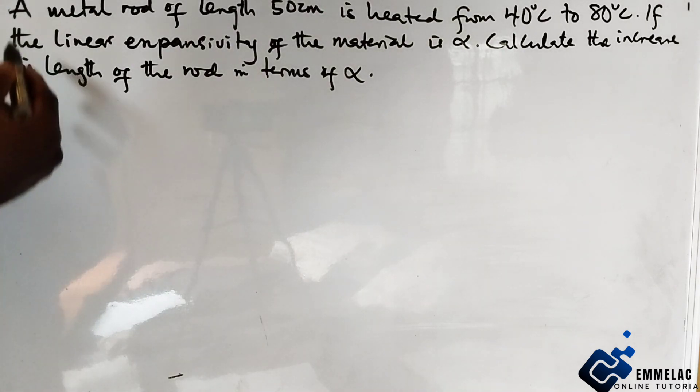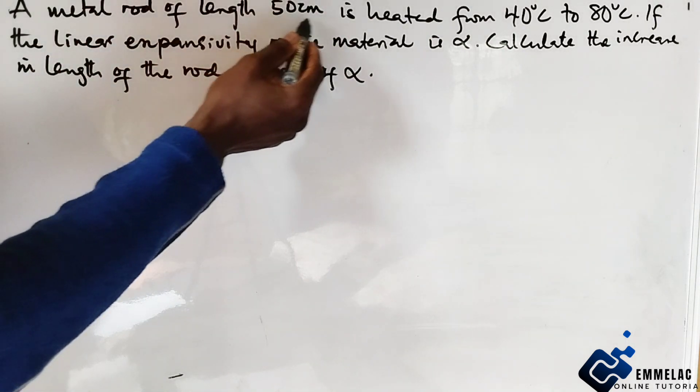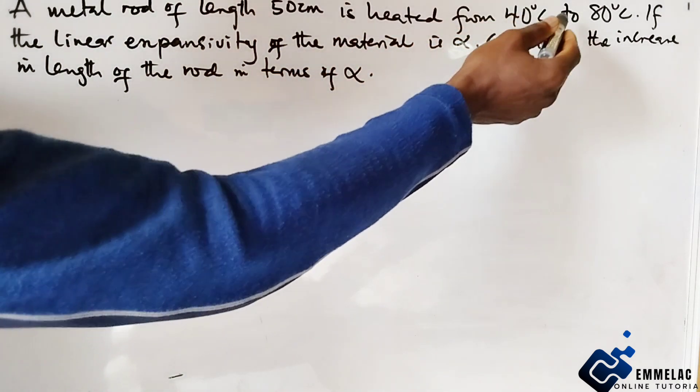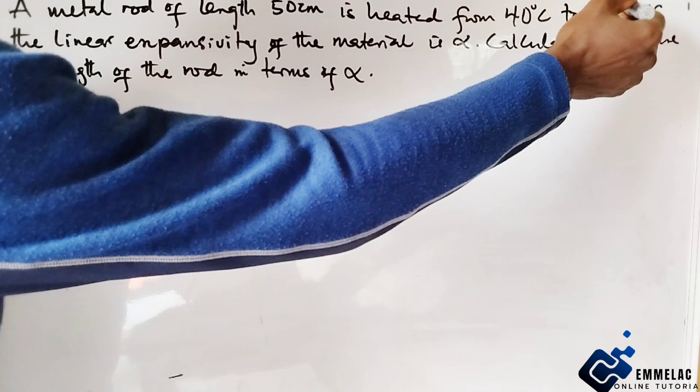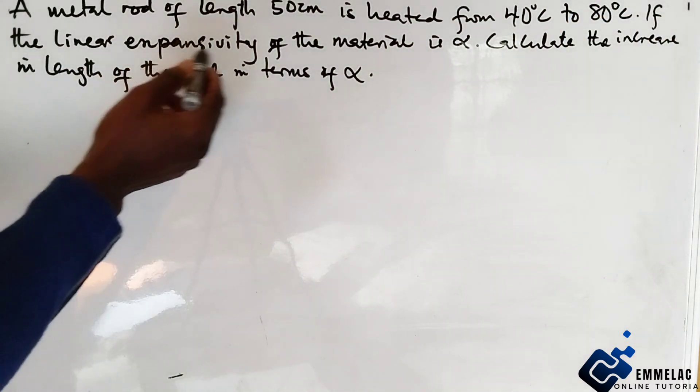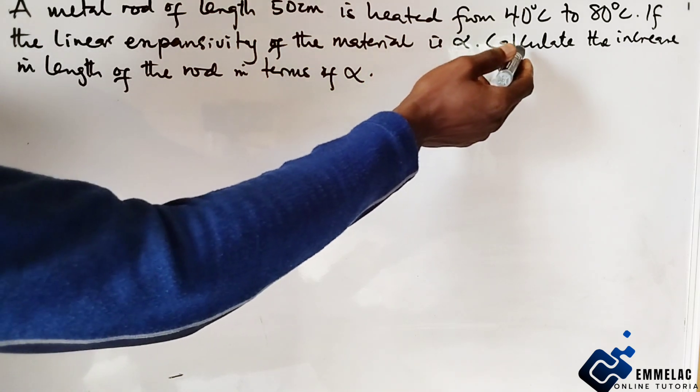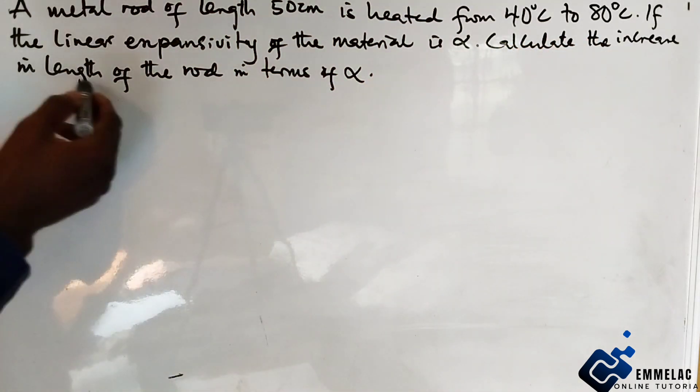A metal rod of length 50 centimeters is heated from 40 degrees Celsius to 80 degrees Celsius. If the linear expansivity of the material is alpha, calculate the increase in length of the rod in terms of alpha.